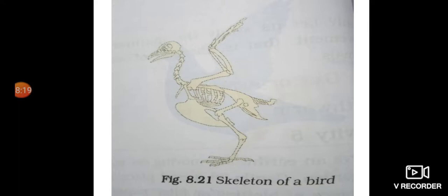The breast bones are modified to hold the muscles of flight, which are used to move the wings up and down. This helps the wings move up and down.